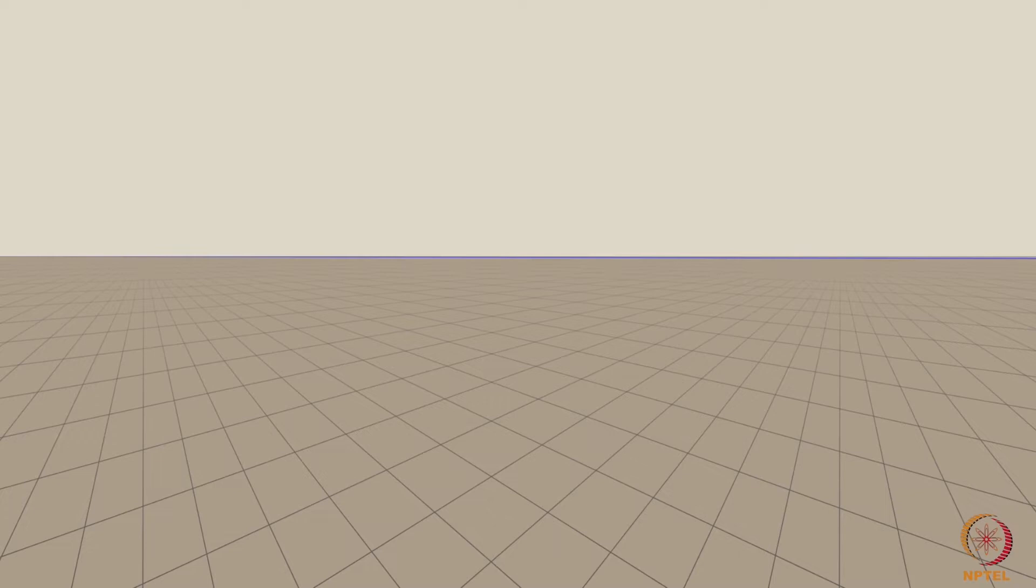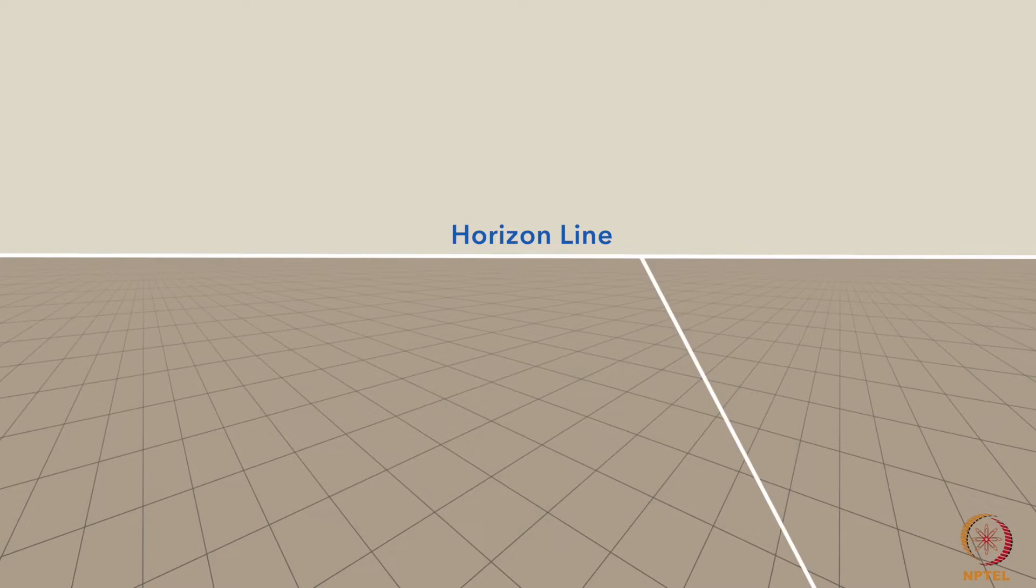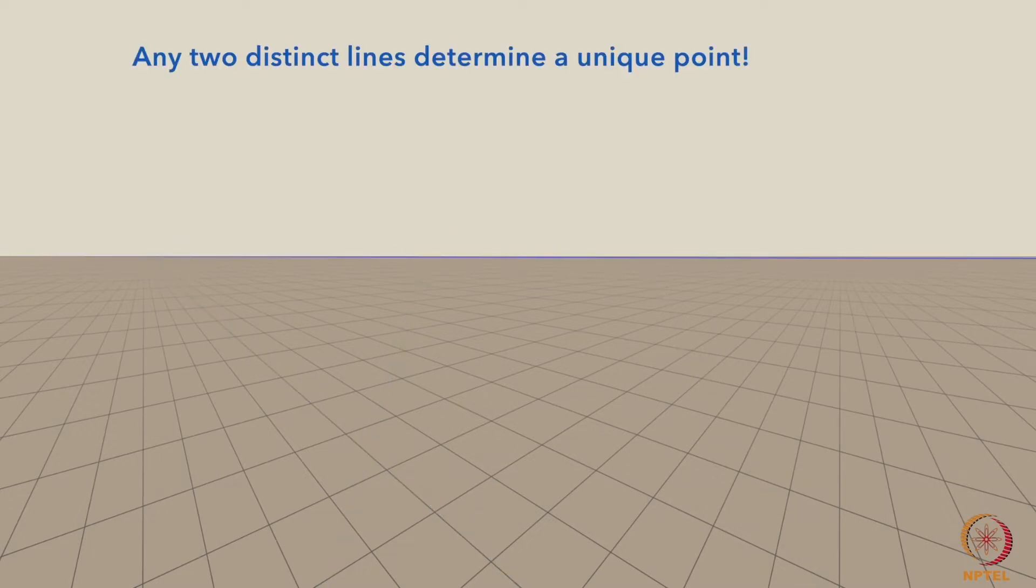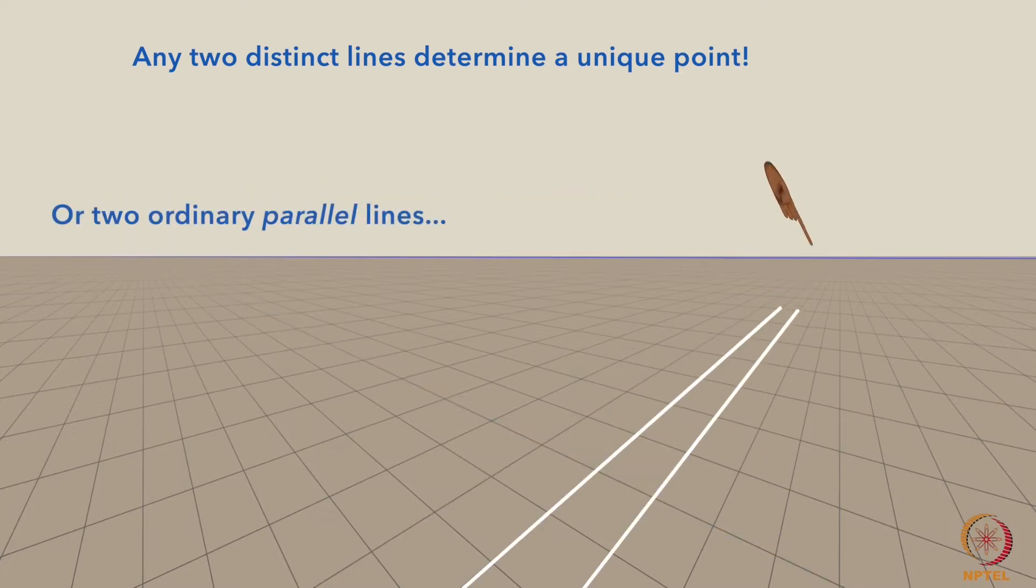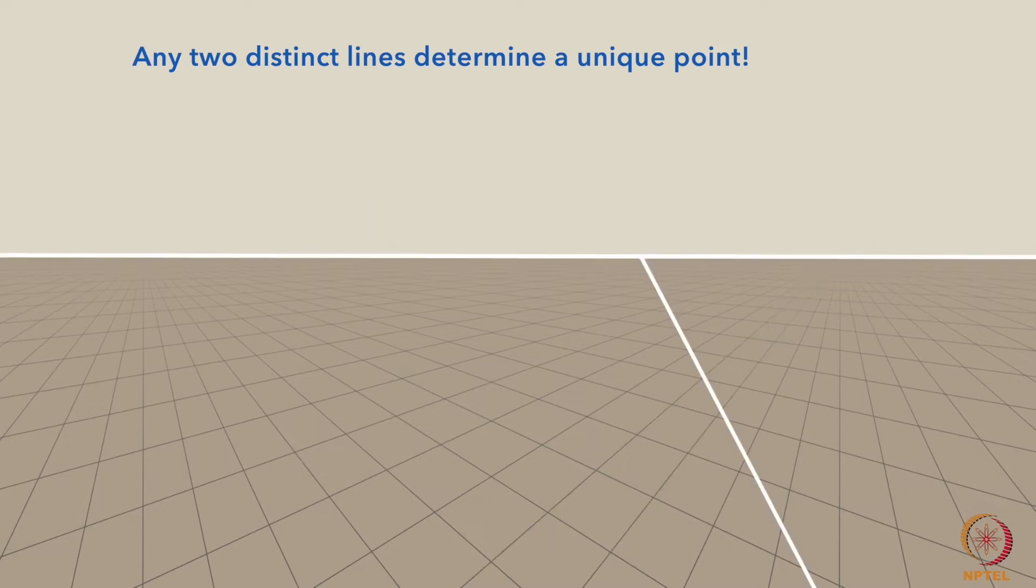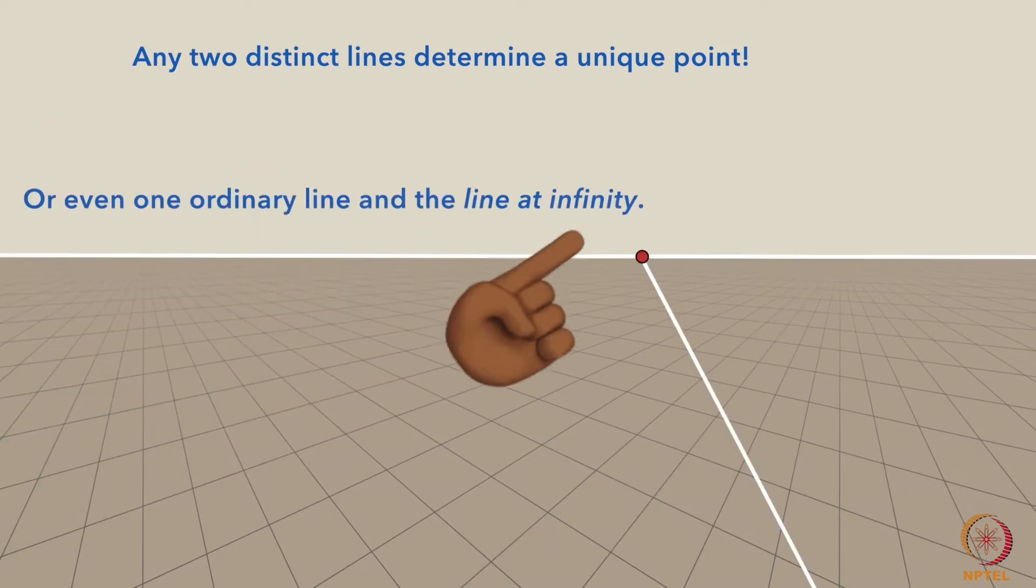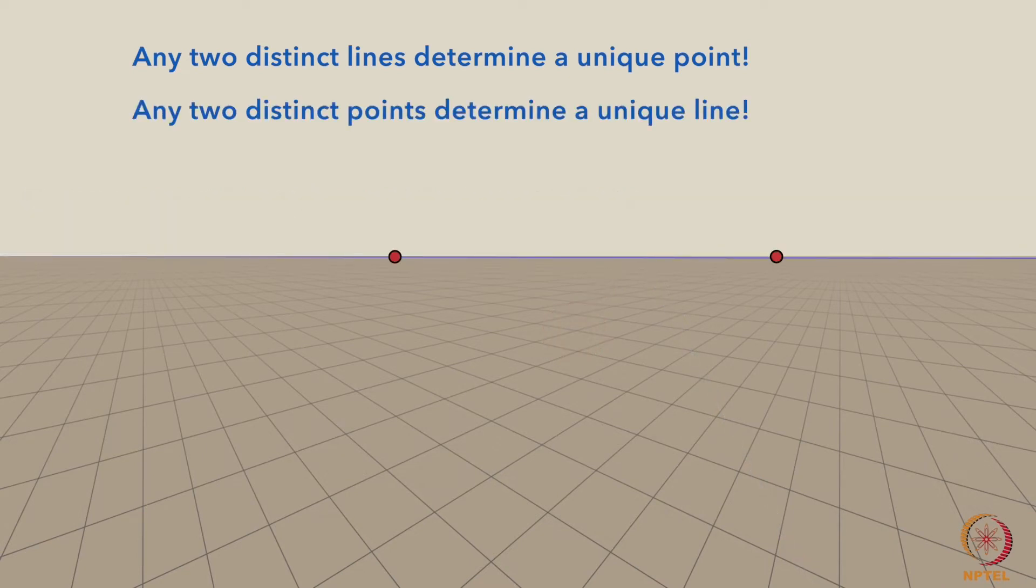Moreover, there's now a full line at infinity, the horizon line, which intersects every ordinary line at a single point at infinity. In this way, any two distinct lines now determine a unique point. These could be two ordinary non-parallel lines, or two ordinary parallel lines, or even one ordinary line with the line at infinity. Moreover, any two distinct points continue to determine a unique line.